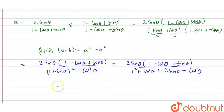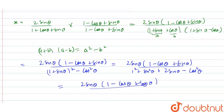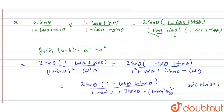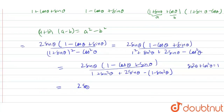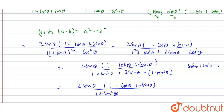So now we can solve this as 2 sin theta into 1 minus cos theta plus sin theta divided by 1 plus sin squared theta plus 2 sin theta minus cos squared theta. We know that sin squared theta plus cos squared theta equals 1, so cos squared theta equals 1 minus sin squared theta. Substituting, we get 1 plus sin squared theta plus 2 sin theta minus 1 plus sin squared theta. The 1s cancel.